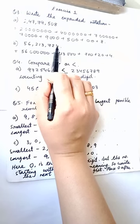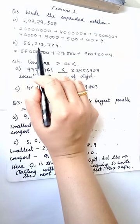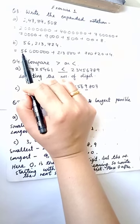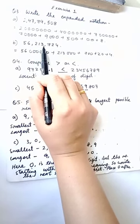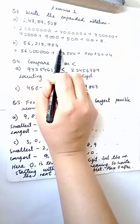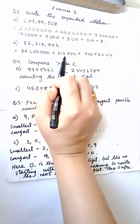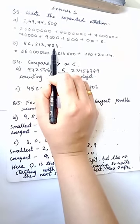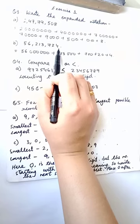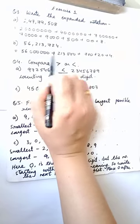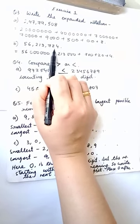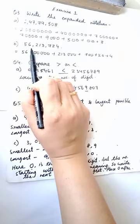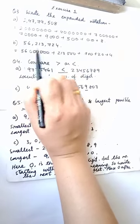The number of zeros — 1, 2, 3, 4, 5, 6 — so 6 zeros after 56. Directly 213 with 3 zeros will be 213,000 plus 700 plus 20 plus 4. So this is the expanded form for 56,213,724.